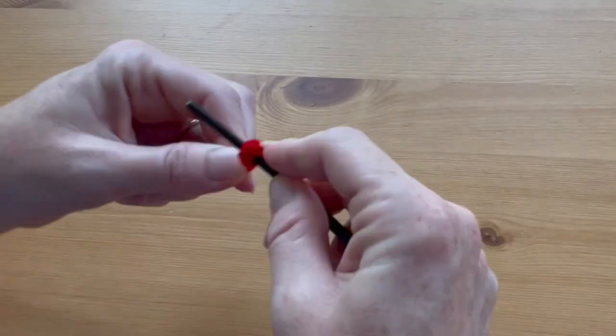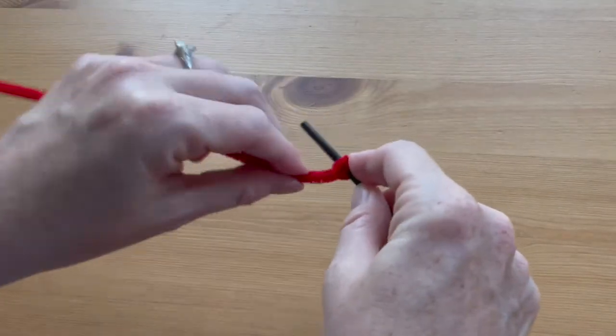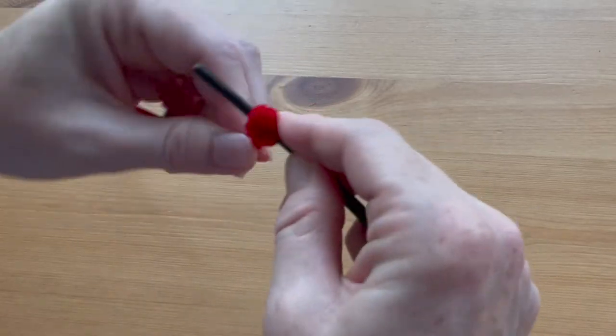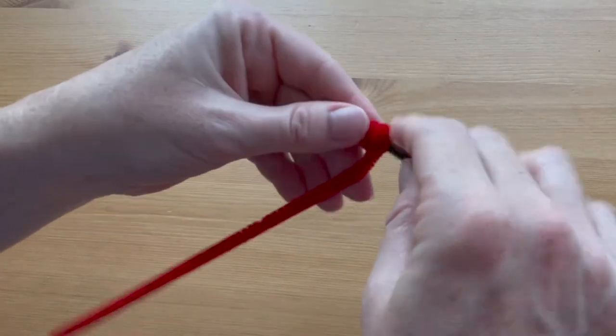Hold the end of one of the red pipe cleaners up against the handle of the paintbrush. Wrap it around, coiling it one coil right on top of another to create a bundle.